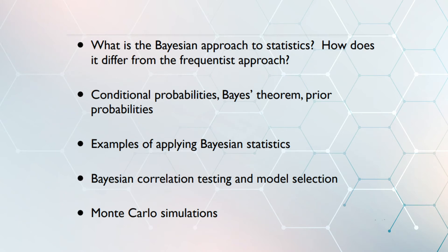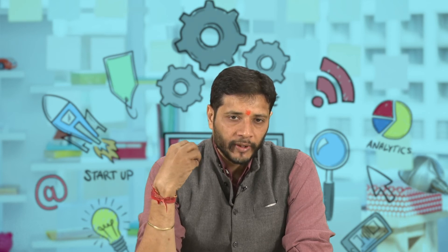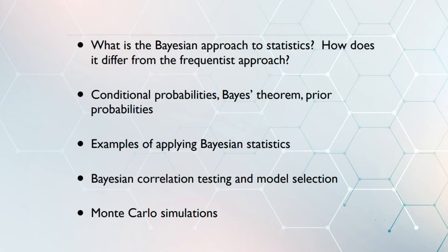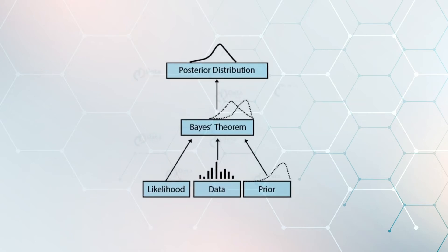What is the Bayesian approach to statistics, and how does it differ from the frequentist approach? Topics to cover include conditional probabilities, Bayes' theorem with priori probabilities, and examples of applying Bayes in correlation testing and model selection. Looking at a diagram, the Bayes process has prior probability at the center, then new information comes in, and the result is posterior probability. Another view shows that from Bayes' theorem, together with likelihood data and prior, the posterior distribution is created.